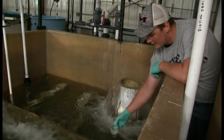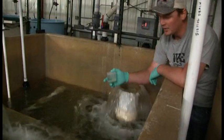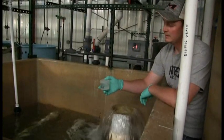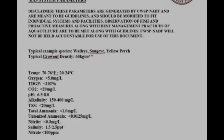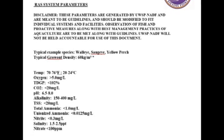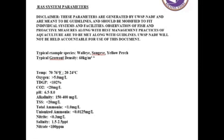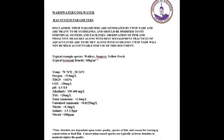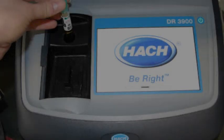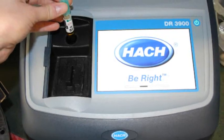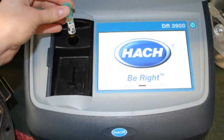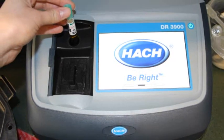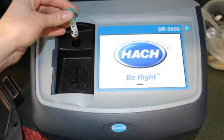Further water quality parameters are checked and recorded weekly, or depending on system maturity and bio plan. This includes, but is not limited to, salinity, carbon dioxide, ammonia, nitrite, nitrate, hardness, alkalinity, and total suspended solids. UWSP NADF utilizes a spectrophotometer for precise and accurate readings — a HACH 3900 model is shown here.